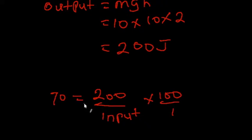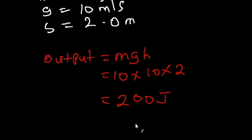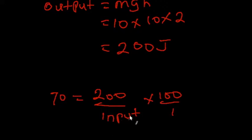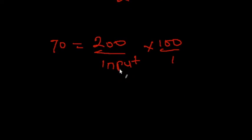So our efficiency 70 is equal to our output, which we just calculated to be 200, all over the input multiplied by 100 over 1. Since we are looking for the value of the input work done, we're going to make the input work done the subject of the formula.